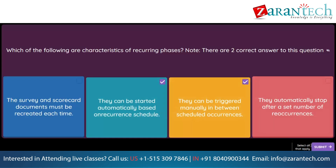Question. Your customer is using SAP Ariba Supplier Lifecycle and Performance and wants to send a survey to registered suppliers for review annually. What process do you recommend? Option 1: Supplier workspace. Option 2: Modular questionnaire. Option 3: Knowledge project. Option 4: Supplier request.